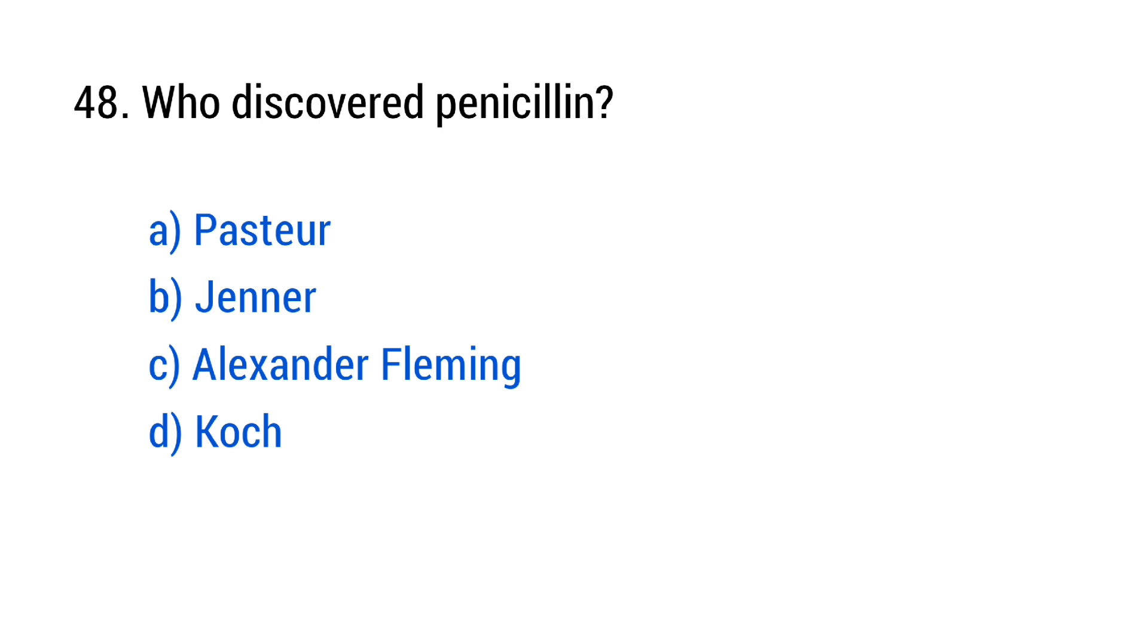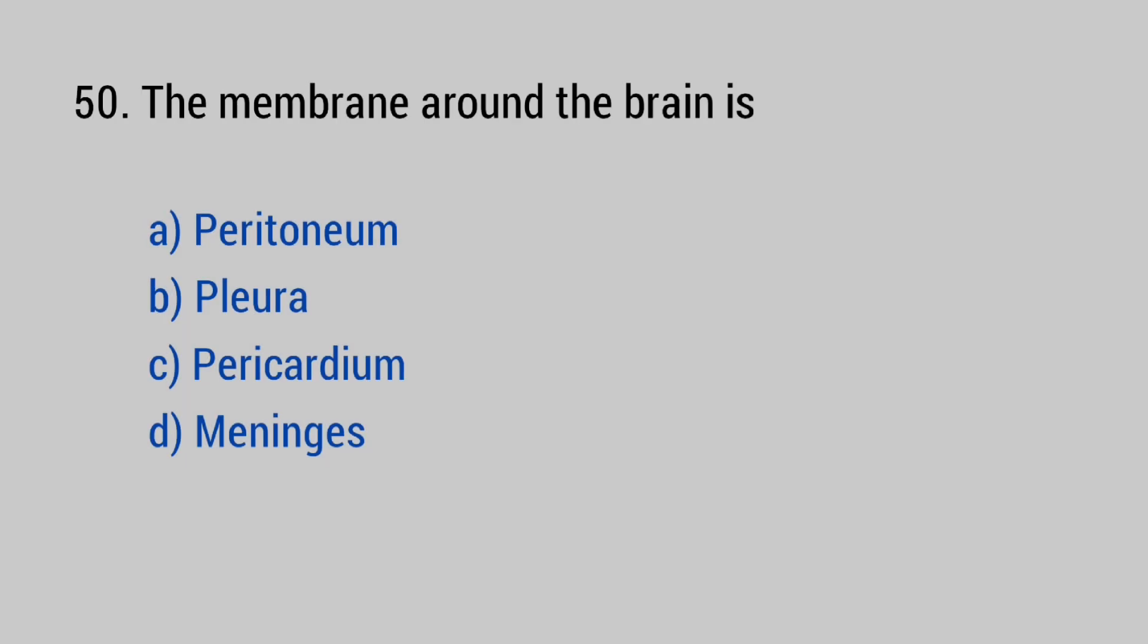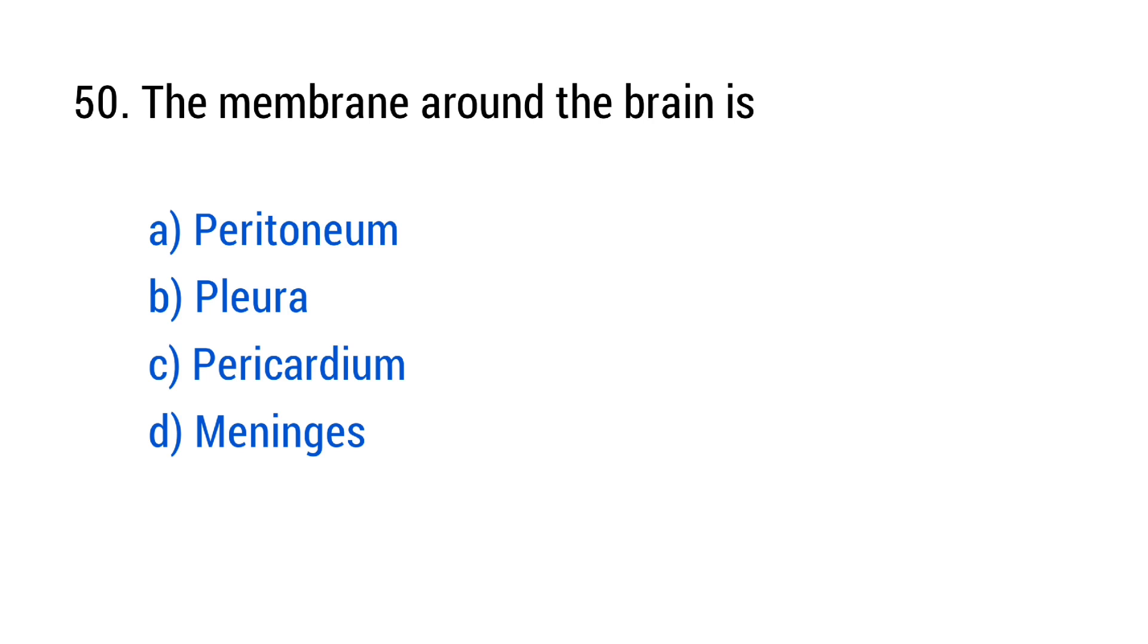Question number 48. Who discovered penicillin? The right answer is option C, Alexander Fleming. Question number 49. The vector of malaria is? The right answer is option B, Anopheles mosquito. Question number 50. The membrane around the brain is? The right answer is option D, meninges.